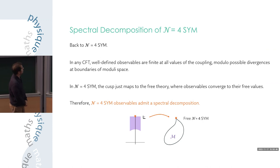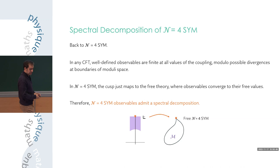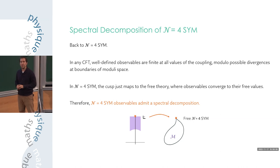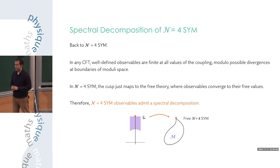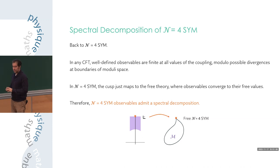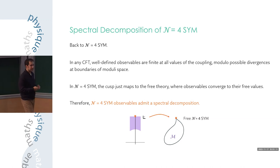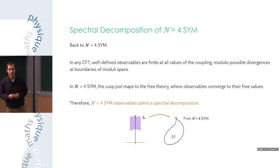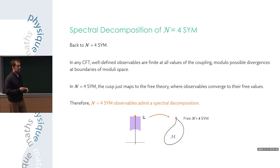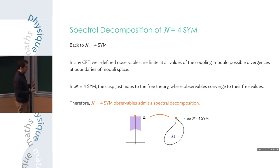Back to N=4. The statement is simple: in any CFT, well-defined observables are finite at all values of the coupling. In N=4, the only boundary of moduli space is the cusp at infinity — the free theory — so well-defined observables are finite there, asymptoting to their free values. They are therefore square integrable and admit a spectral decomposition. Contrast this with 2D CFT partition functions, which diverge exponentially at the cusp — one needs more care there. In N=4 super Yang-Mills, this formalism fits like a glove.